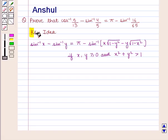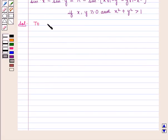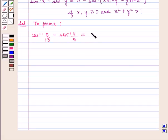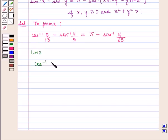With this key idea, we shall proceed with the solution. We need to prove that cos⁻¹(5/13) minus sin⁻¹(4/5) is equal to π minus sin⁻¹(16/65). Taking the left-hand side of the expression, we have cos⁻¹(5/13) minus sin⁻¹(4/5).